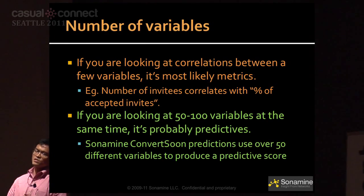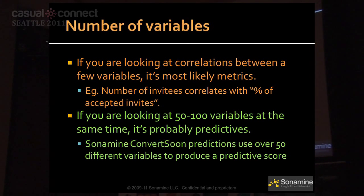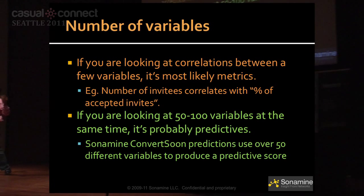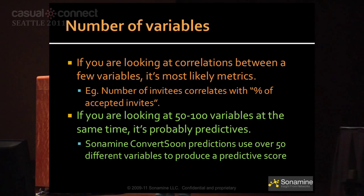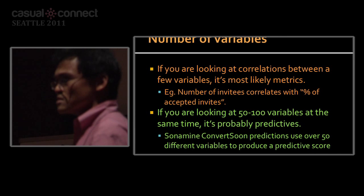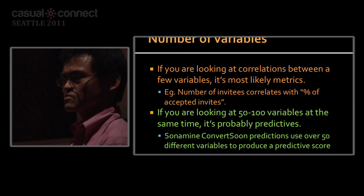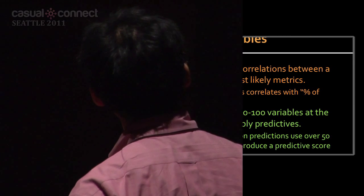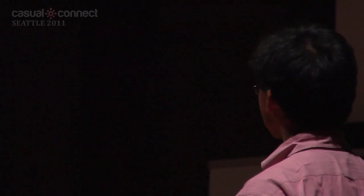The third identifier is the number of variables. If you're looking at just a few variables — does MAU correlate with opt-out, two variables — you're looking at a metric. But if you're looking at many, many variables — 50 to 100, 200, 300 variables at the same time — you're probably looking at a predictive. One operator we work with has about 450 variables just to predict when you will churn, when you will switch from one carrier to another.